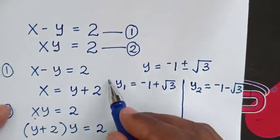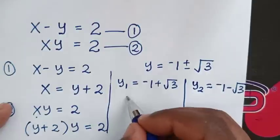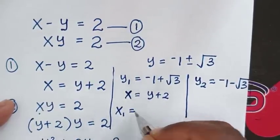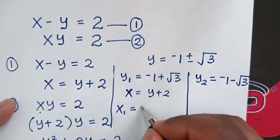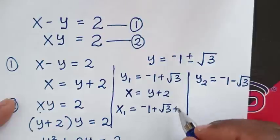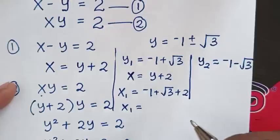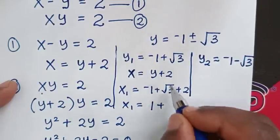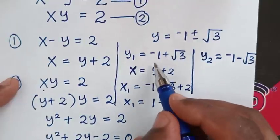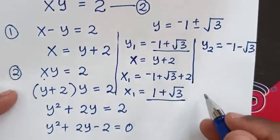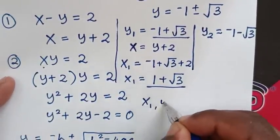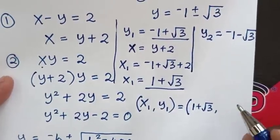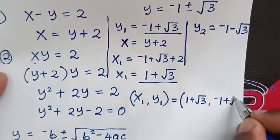To find the value of x, we use x equals y plus 2. For the first solution, x1 equals y1 plus 2, which is negative 1 plus square root of 3, plus 2. So x1 equals 2 minus 1, which is 1, plus square root of 3. The conclusion for the first solution: x1 comma y1 is equal to 1 plus square root of 3, comma negative 1 plus square root of 3.